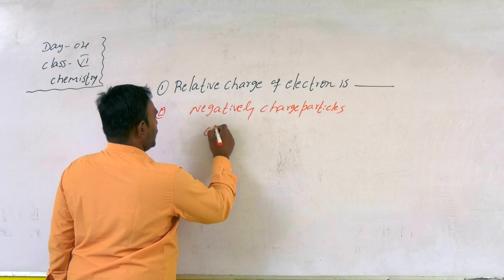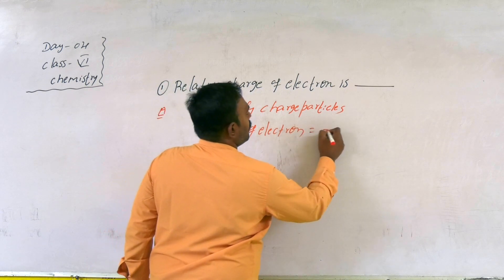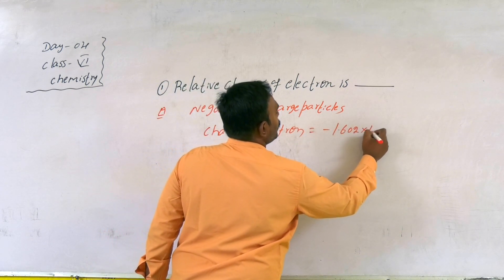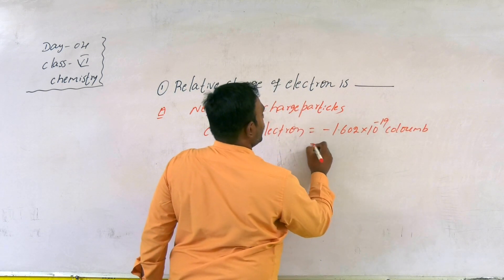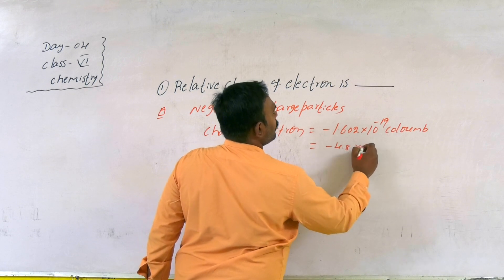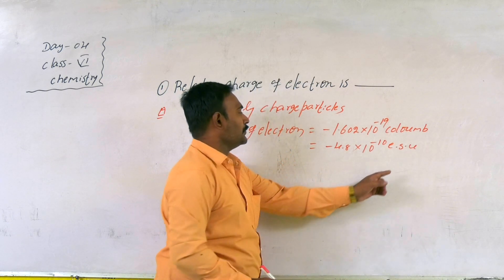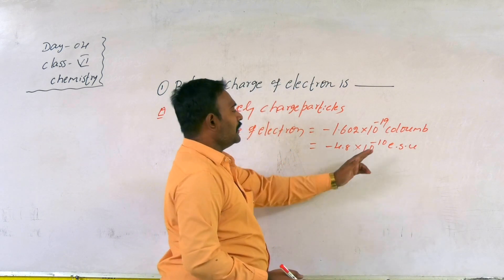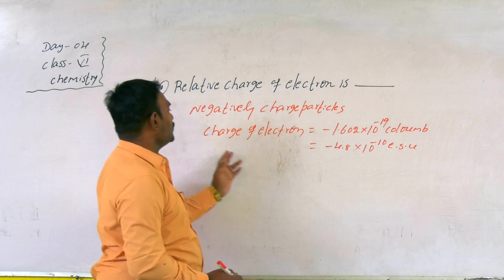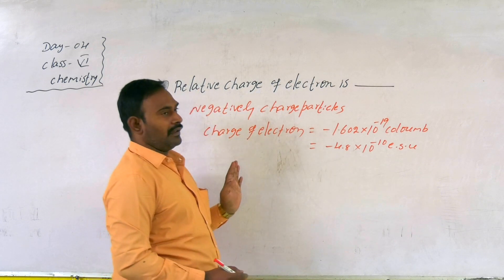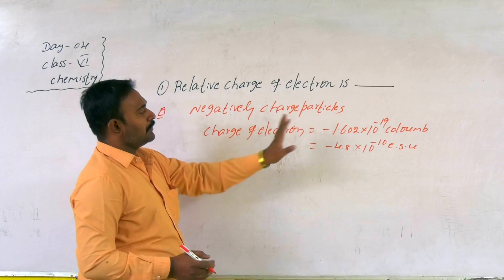The charge of the electron is minus 1.602 into 10 to the power minus 19 coulomb. Otherwise, minus 4.8 into 10 to the power minus 10 ESU. ESU means electrostatic unit — it is the CGS unit of charge, while coulomb is the SI unit of charge. This is the absolute charge of the electron. The relative charge of the electron means we simply write it as minus 1.